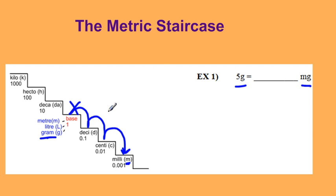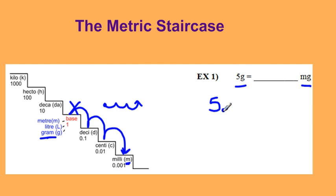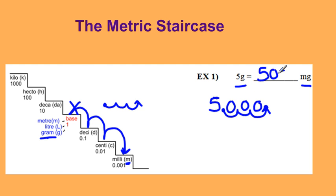Since this is just like multiplying by ten for each stair, I actually just have to move my decimal place to the right three times. So I'm going down three stairs which means I'm moving the decimal to the right three times. I'm starting at five — we can always assume our decimal place is right after the number. Moving it over three to the right and filling in the spots with zeros. So five grams is five thousand milligrams.